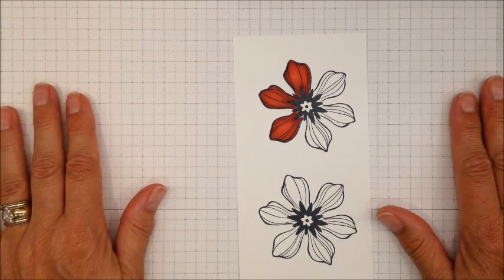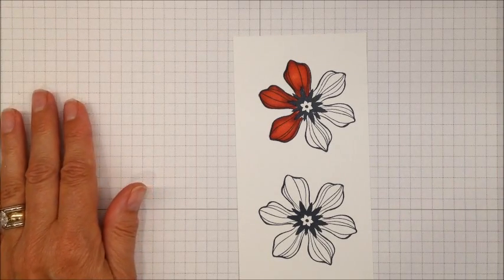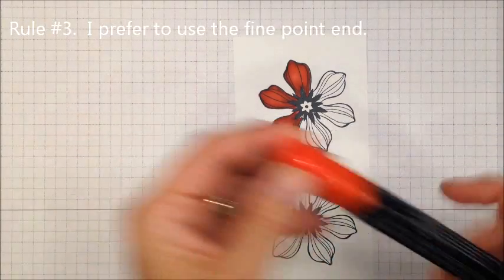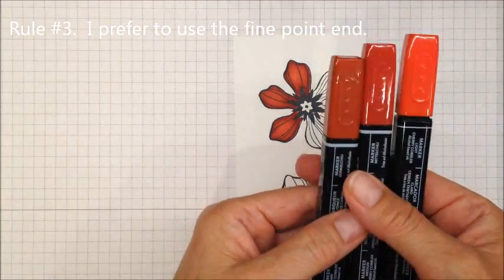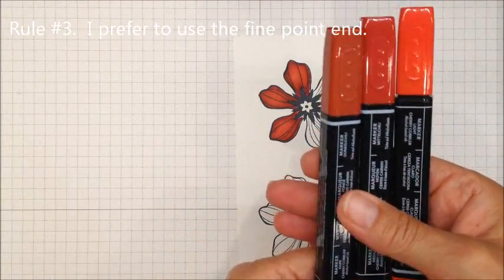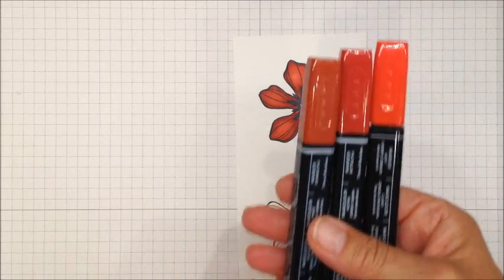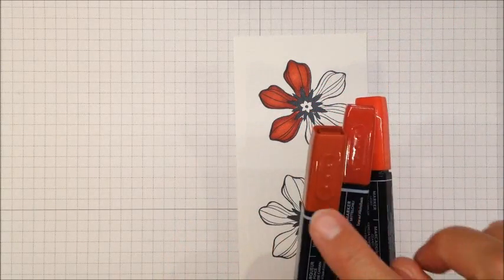Number three is I like to use the fine point on these. You'll notice that there are three colors within each specific color. So this is Cherry Cobbler, all three of these. And you have a light, medium, and dark.